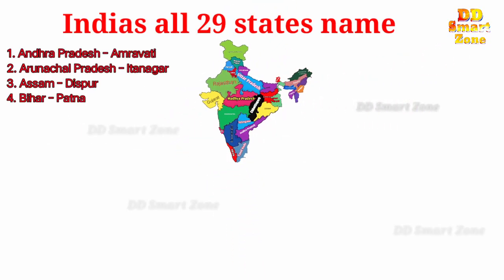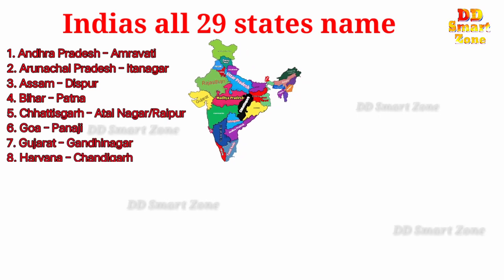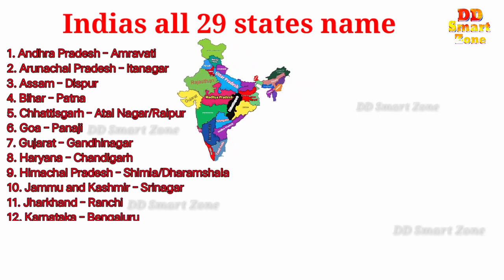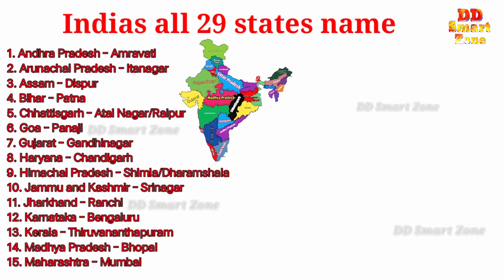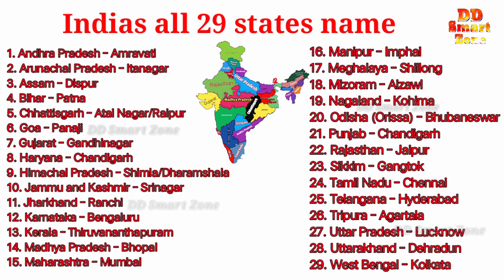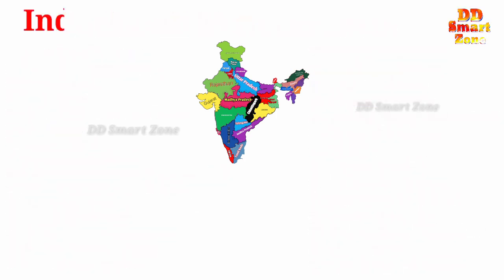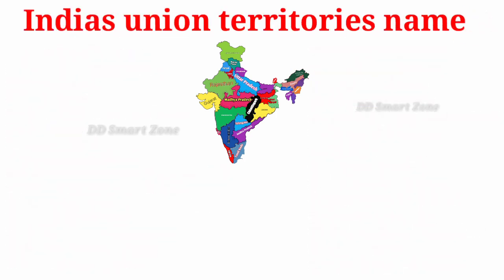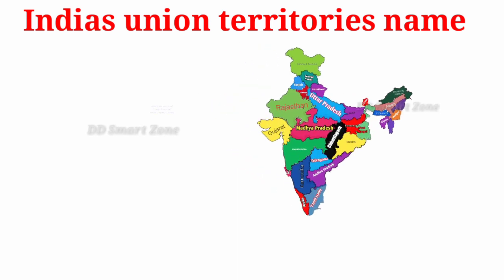We had learned about India's all 29 states name within pictures of map. Now we are going to learn about India's all union territories name.